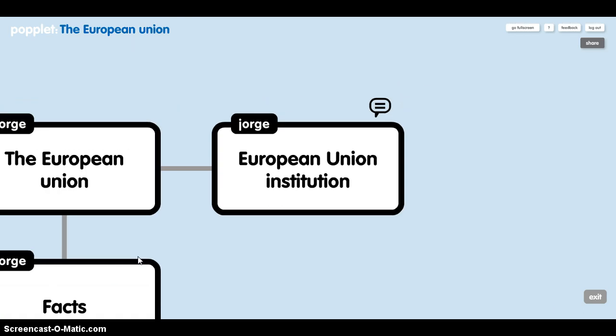European Union institutions. Most European Union institutions are based in Brussels, Belgium, Strasbourg, France and the city of Luxembourg. The main institutions are the Council of the European Union, the European Parliament, the European Commission, and the Court of Justice.